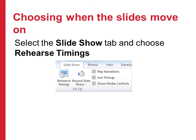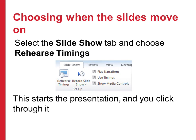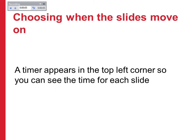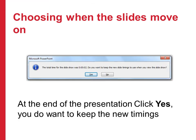Now we've added the audio to each of our slides. If we want to choose when the slides move on and match our presentation to the audio, we click on the Slide Show tab in PowerPoint and choose Rehearse Timings. This starts the presentation and a timer appears in the top left corner — the number on the left is the time for that slide, the number on the right is the total time. At the end, a notice shows the total time and asks if you want to keep your timings. Click Yes to keep them for your movie file.